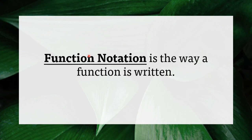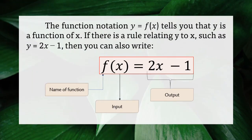Let's have Function Notation. It is a way a function is written. The function notation y equals f of x tells you that y is a function of x. If there is a rule relating y to x, such as y equals 2x minus 1, then we can write this as f of x equals 2x minus 1. Here, f is the name of the function, x is the input or the x-values, and 2x minus 1 is the output — it pertains to the range or the y-values, the result.